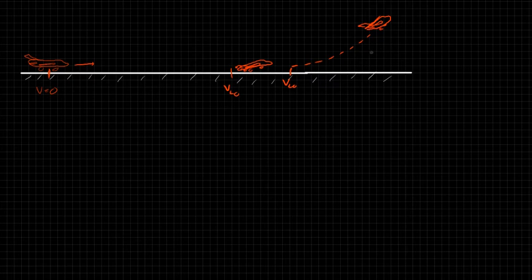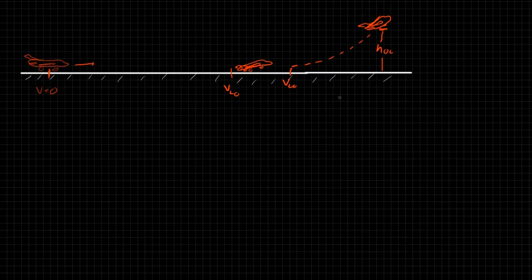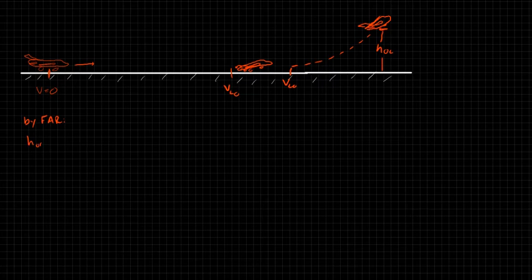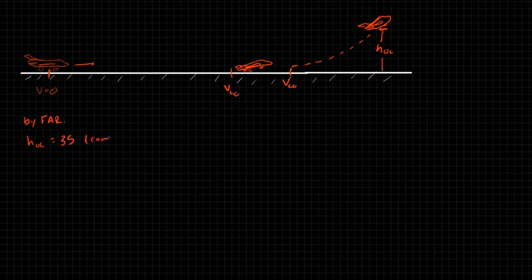The height the aircraft has to be at the end of the runway is the obstacle clearance height, which we call h sub oc. This is dictated by FAR regulations. By FAR regulations, the obstacle clearance height is usually around 35 feet for commercial aircraft, but for general aviation aircraft it's usually around 50 feet.